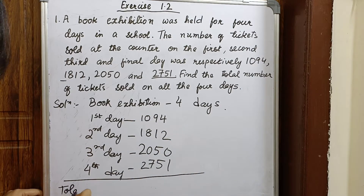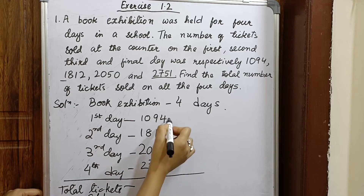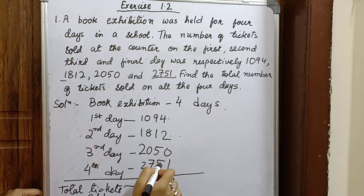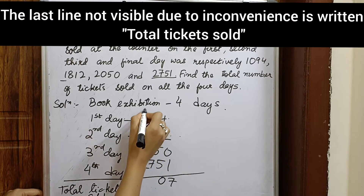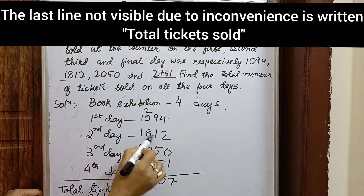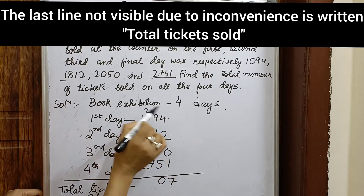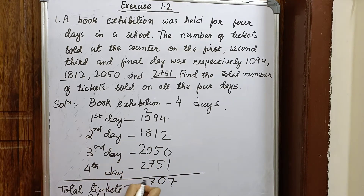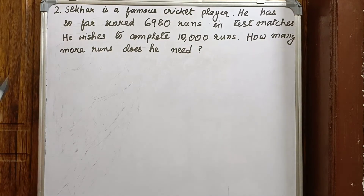The total tickets sold is the sum of all four numbers. The total number of tickets sold on all four days is 7707.